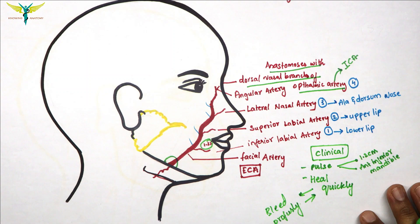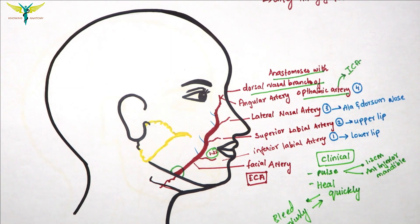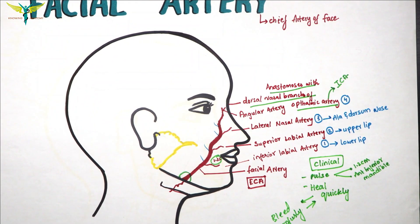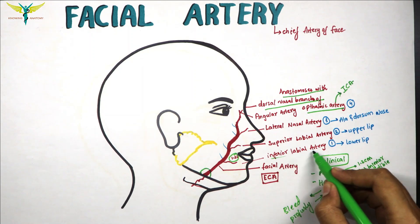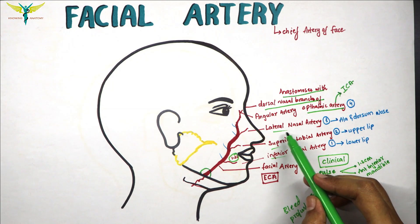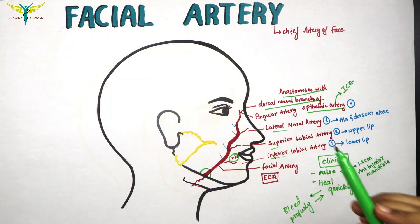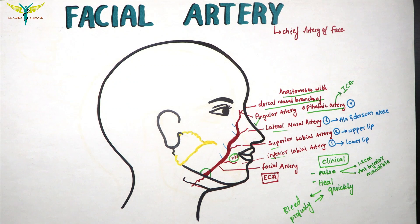In summary, the facial artery is the chief artery of the face. It has four branches: the inferior labial artery, the superior labial artery, the lateral nasal artery, and the terminal branch, which is the angular artery. If you like this video, please subscribe to my channel.